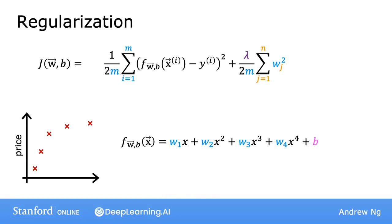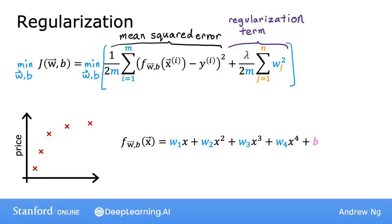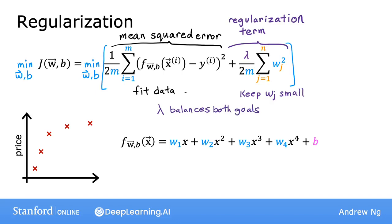To summarize, in this modified cost function we want to minimize the original mean squared error cost plus the regularization term. This new cost function trades off two goals: minimizing the first term encourages the algorithm to fit the training data well, while minimizing the second term keeps the parameters wj small, which reduces overfitting. The value of lambda you choose specifies the relative importance — the trade-off — between these two goals.